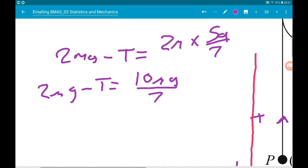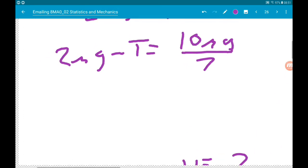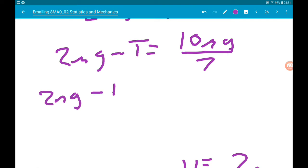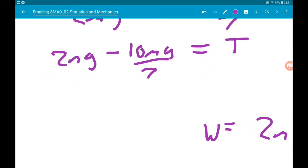Now if we add tension and subtract the 10MG over 7, we get tension is equal to 2MG minus 10MG over 7. Now 2 in terms of sevenths is 14 over 7. So we got 14 over 7 minus 10 over 7 MG. So we get tension is 4MG over 7. Cool.